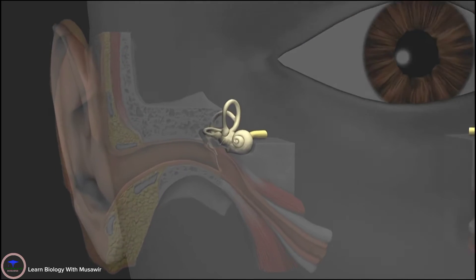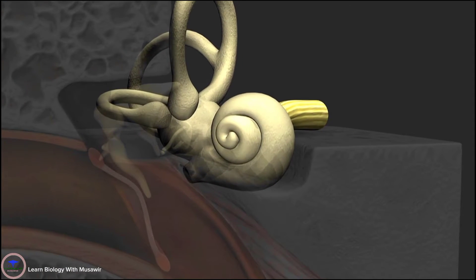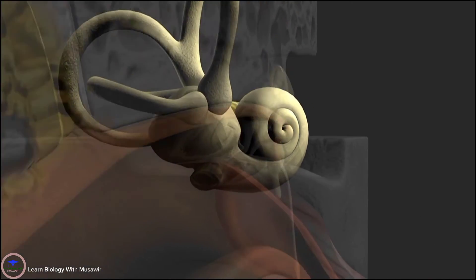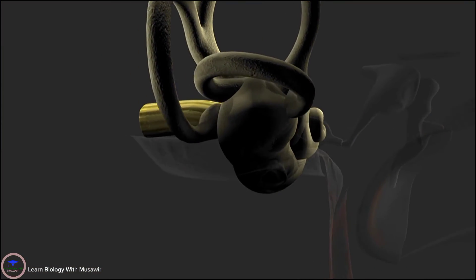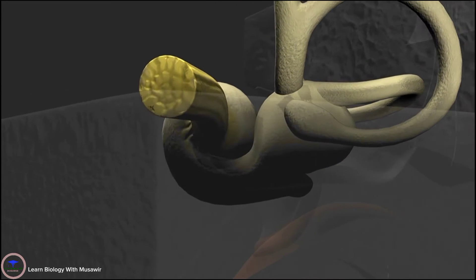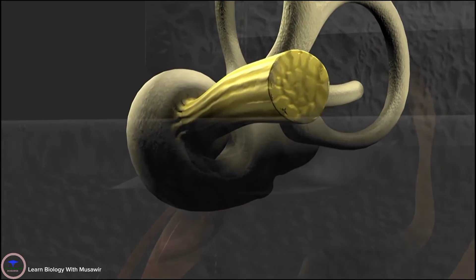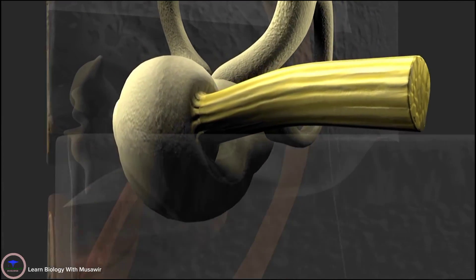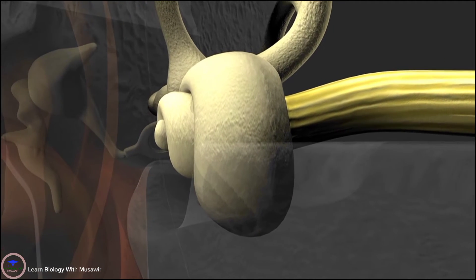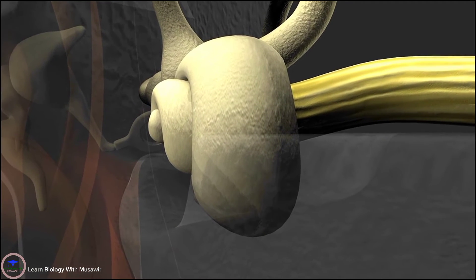The cochlea appears as a coiled tube in the shape of a snail shell with between two and a half and two and three quarter turns. It is wrapped around the acoustic portion of the auditory nerve. If we were to unravel the cochlea, it would be about 35 to 40 millimeters long.